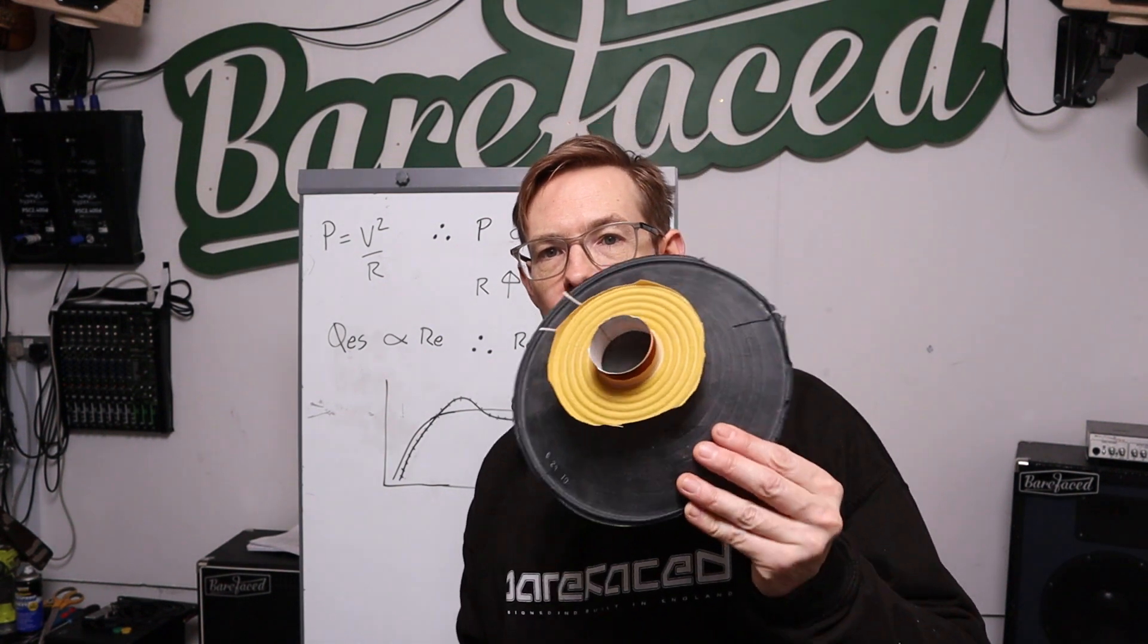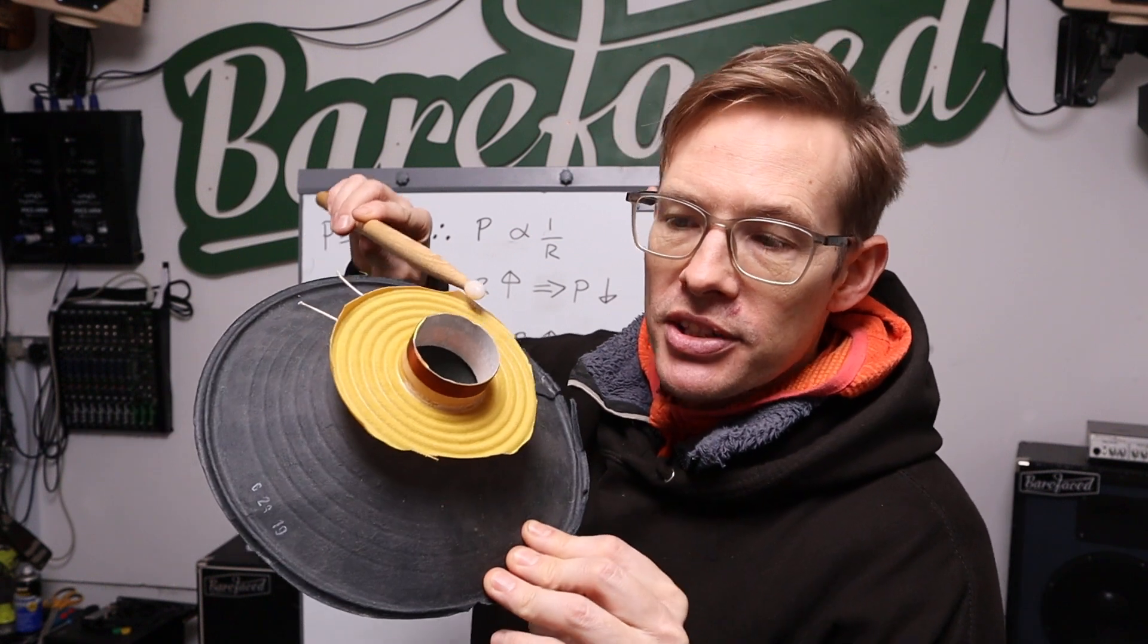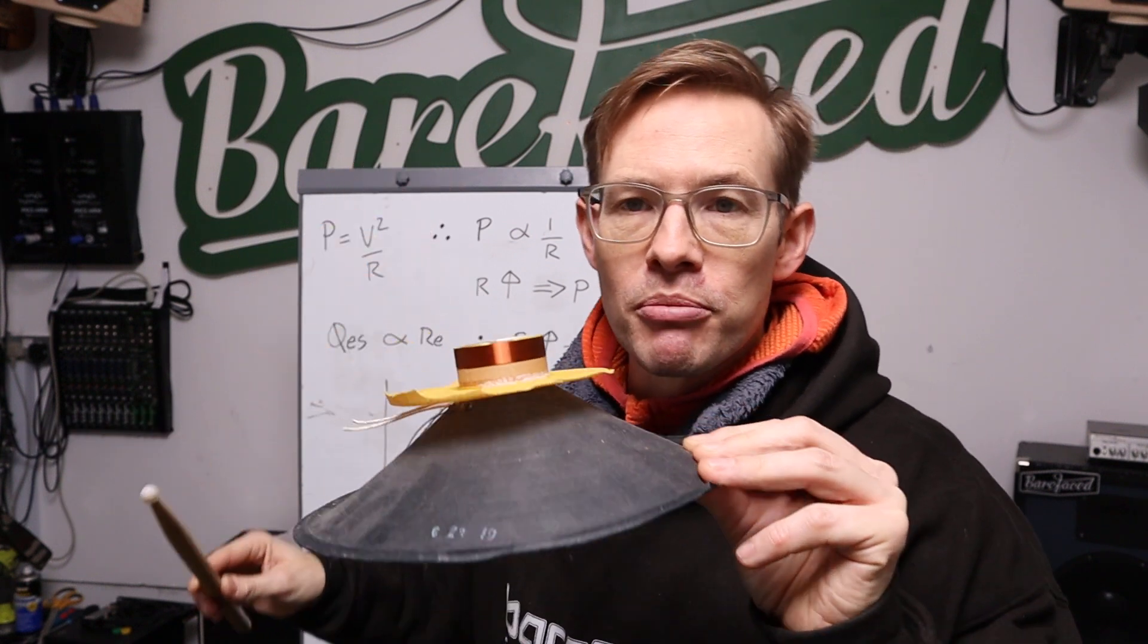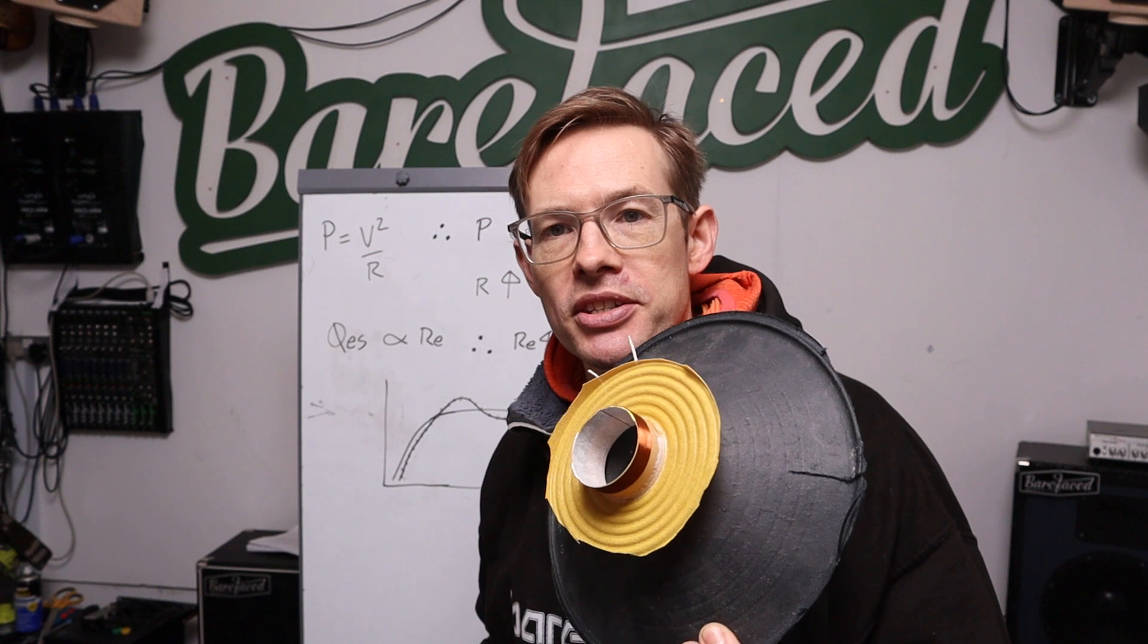So here we have a loudspeaker. This is the voice coil, this is what the electricity flows through and generates an electromagnetic field, then pushes against the magnet in your speaker and makes the cone move backwards and forwards and makes sound.